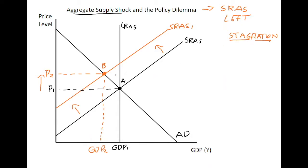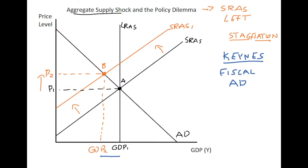What this opens up is a gap in the economy. Keynesian policy would suggest that fiscal policy can be used to close that gap — advocating fiscal policy to manage the business cycle and aggregate demand. The classic example with this type of output gap, which is recessionary in nature because the output level has fallen, is for fiscal policy to be expansionary.